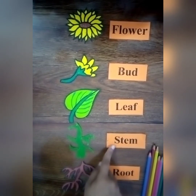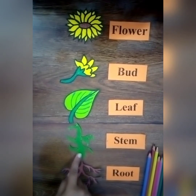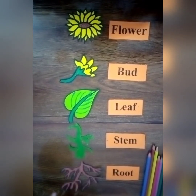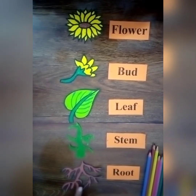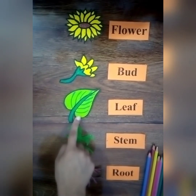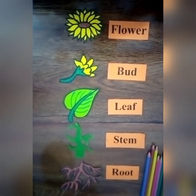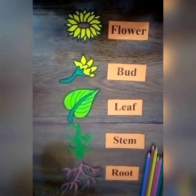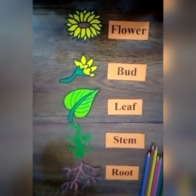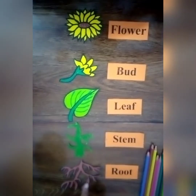Stem provides support to the leaves and transports water and minerals from the roots to the leaves for the preparation of food by photosynthesis. It also transports the prepared food from the leaves to other parts of the plant.